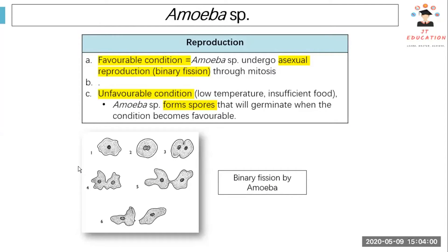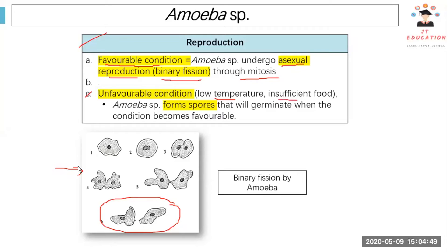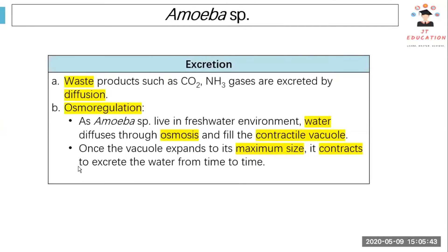Let's see how amoeba reproduces. In favorable conditions, amoeba undergoes asexual reproduction, which is binary fission through mitosis — one amoeba slowly divides into two smaller amoeba. In unfavorable conditions, like low temperature and insufficient food, amoeba will form spores and germinate when conditions become favorable again. For excretion, waste products like carbon dioxide and ammonia gases are excreted by diffusion.